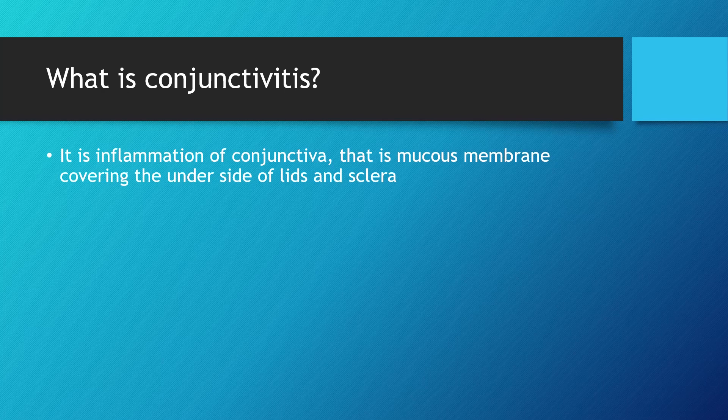Mucus is the innermost layer of the three layers of the tear film. If for some reason the conjunctiva is inflamed, this is known as inflammation. So by definition, conjunctivitis is inflammation of the conjunctiva, which is a mucous membrane covering the underside of the lids and sclera. Conjunctiva is absent over the cornea to maintain a clear optical media for vision, so it ends at the limbus.